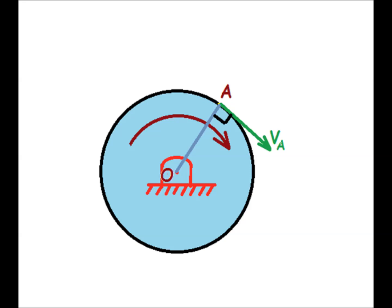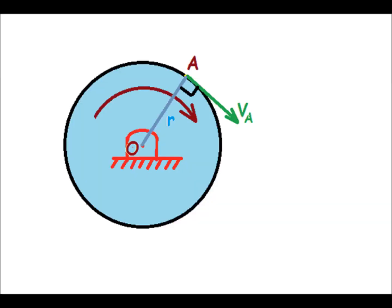If we join O with A, then we will have radius OA or normal at point A, which will be perpendicular to VA, as VA is along the tangent at point A. Let us say OA is denoted by R, that is the radius of the disk.